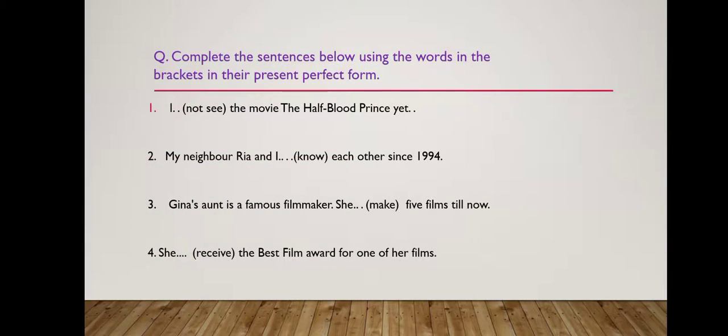Now here is a question for you from your book. Let's check whether you have learned correctly. Try to answer correctly. Complete the sentences below using the words in the brackets in their present perfect forms. Remember: present perfect form is 'has' or 'have' then the third form of the main verb.